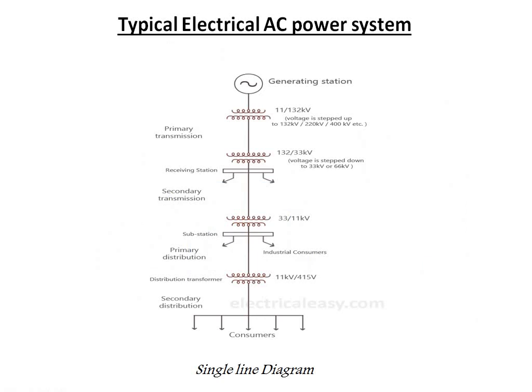This is a single line diagram of a typical electrical AC power system. We can see that the generating station generates voltage in the range of 11 kV, and then it is stepped up by using a step-up transformer rated 11 kV to 132 kV. The voltage is stepped up to 132 kV, 220 kV, or 400 kV depending on the system.